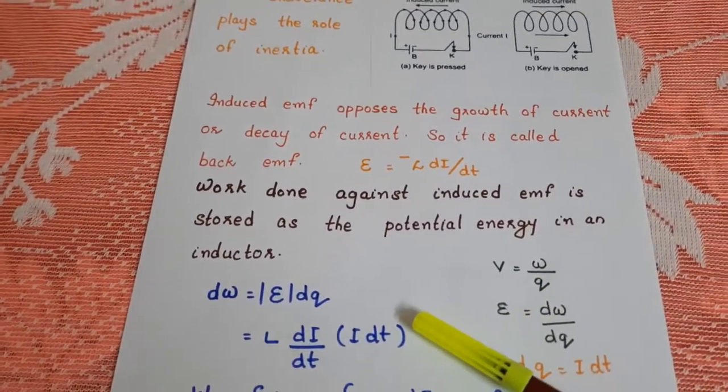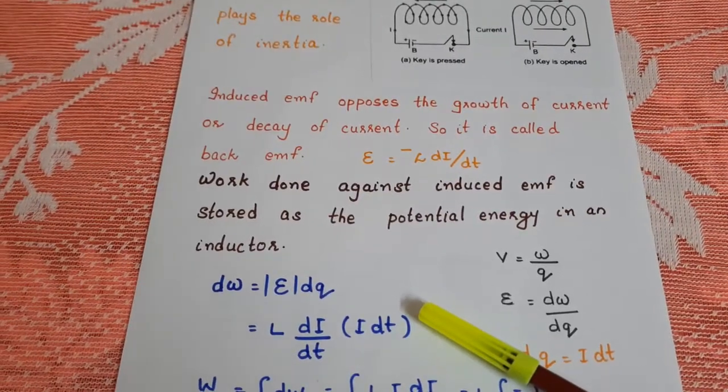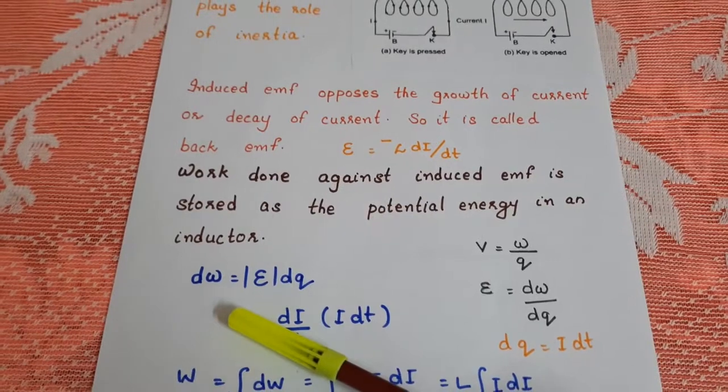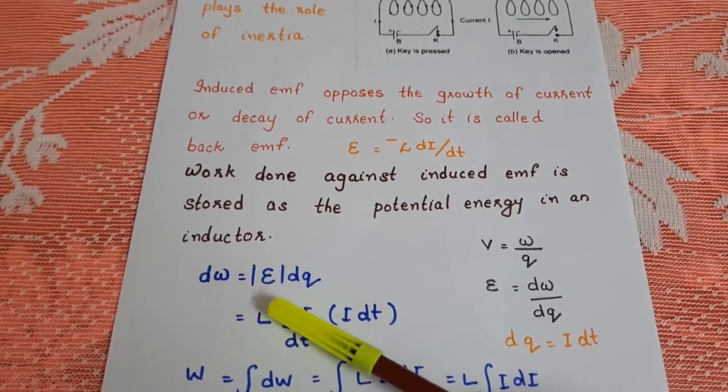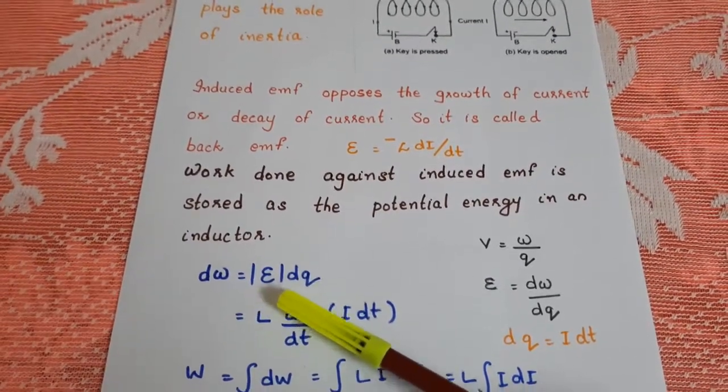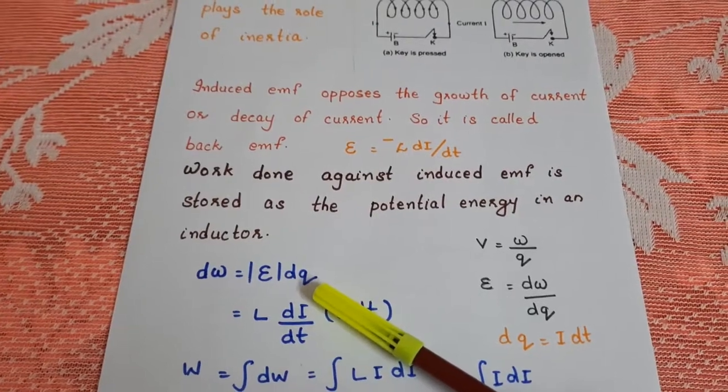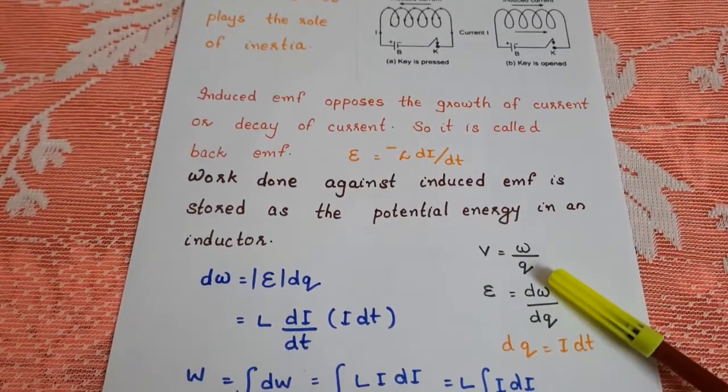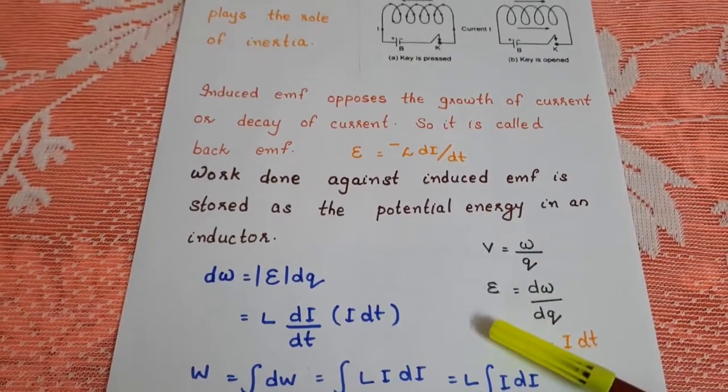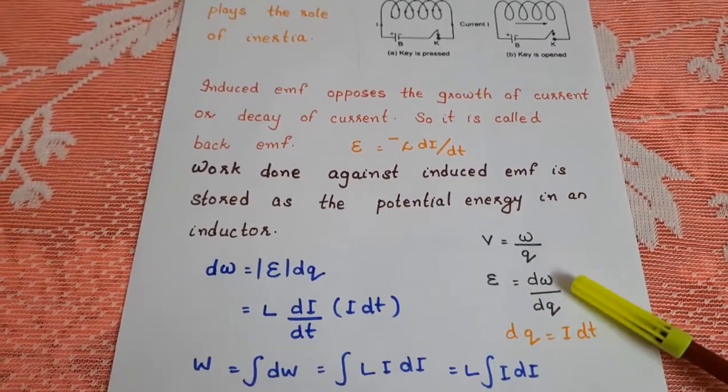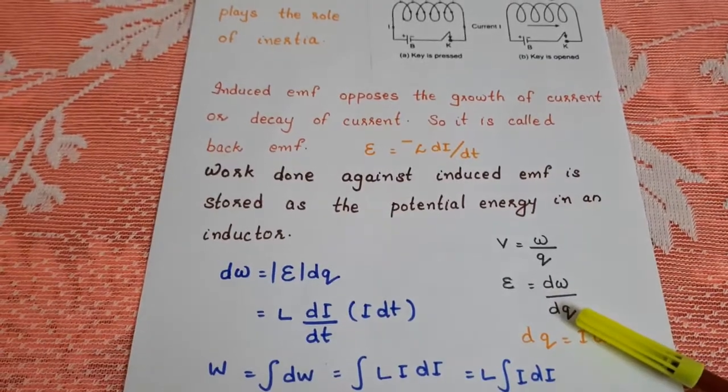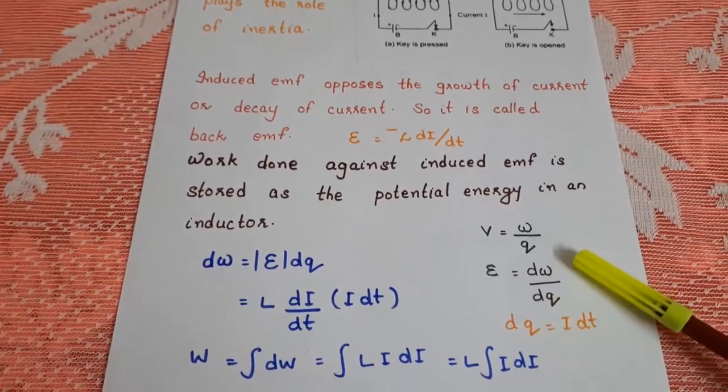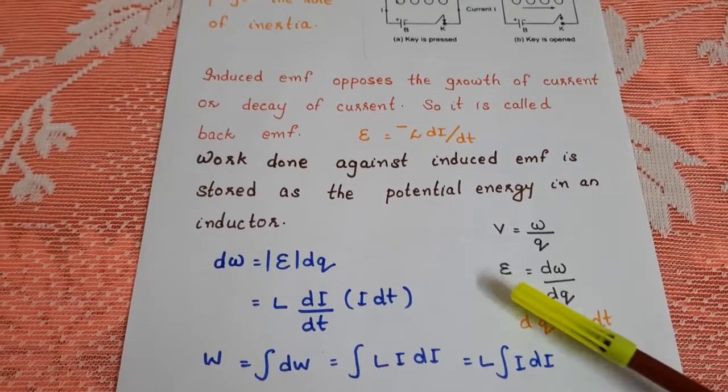Let us calculate the work done by the cell. Work done DW is equal to magnitude of the induced EMF into dQ. As potential is defined as work done per unit charge, or the induced EMF is the work done per unit charge, DW by dQ. So DW is equal to E dQ.